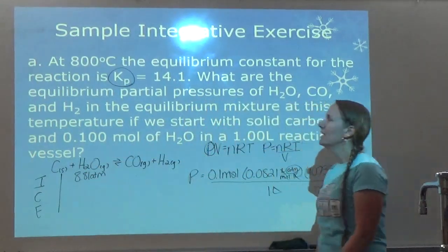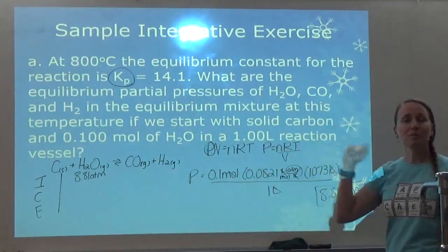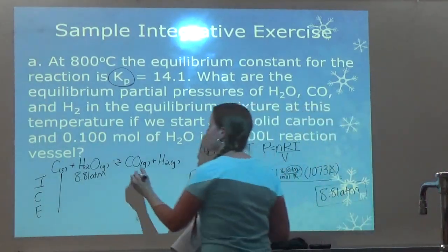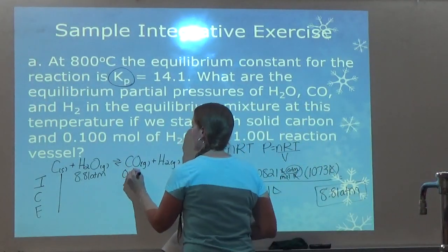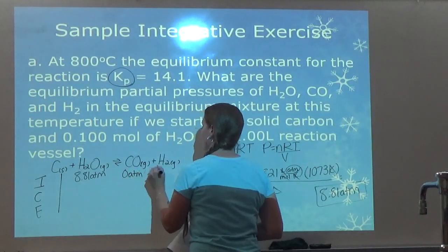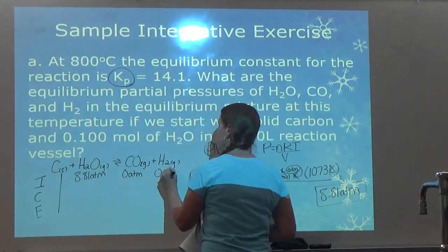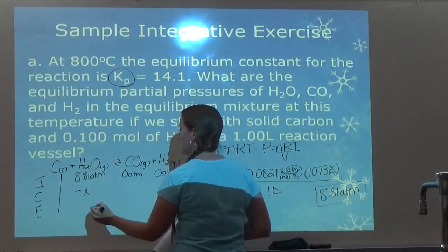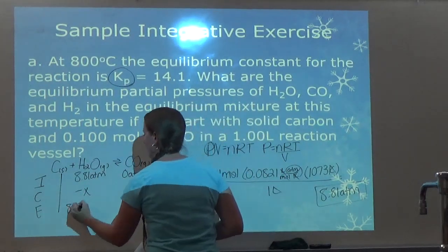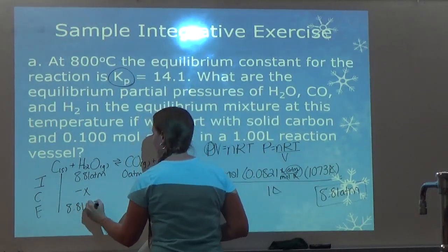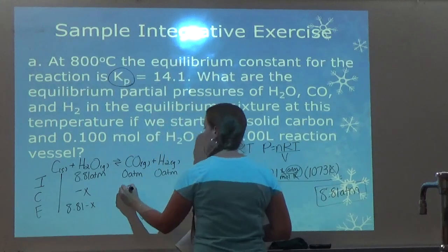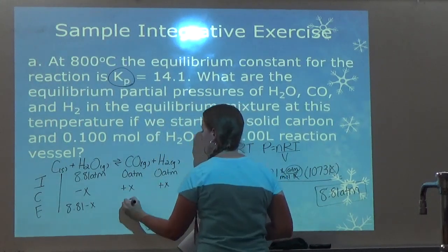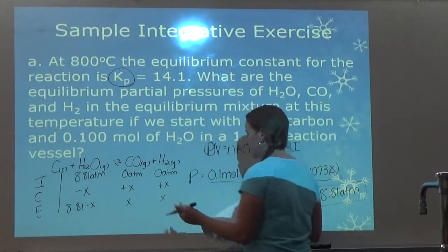So I set up the ICE table. Carbon is a solid so I don't fill anything in for it. Water starts at 8.81 ATM and changes by negative X. The products CO and H2 both start at zero and each change by positive X, giving equilibrium values of X and X.